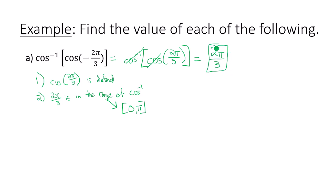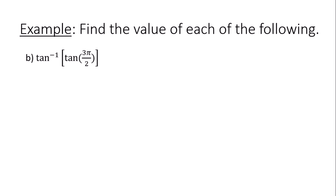You might be wondering: couldn't I have just cancelled out the inverse and the cosine function to begin with? The answer is no — you have to check these two conditions always. For part b, you may want to go ahead and try cancelling out the two functions, but don't do that. You must check condition number one first.